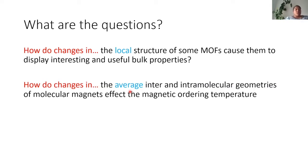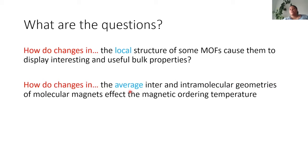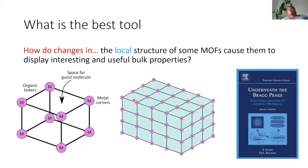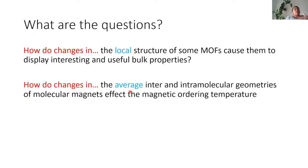Total scattering experiments measure the Bragg peaks, which tell us what the average structure is like, assuming a repeating motif of perfect identical unit cells. These Bragg peaks are big and bright and dominate the scattering pattern, but they aren't the only thing present. Total scattering experiments also record information underneath the Bragg peaks, and it's this information we use to model how the local structure deviates from the average. The book 'Underneath the Bragg Peaks' by Simon talks about local structure and atomic modeling - I recommend having a look at it.